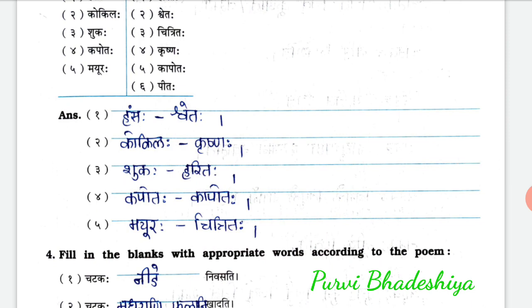1st: Hanchah — Swetah. 2nd: Kokilah — Krushnah. 3rd: Shukah — Haritah. 4th: Kapotah. 5th: Mayurah — Vichitraha. So the first one is swan, and swetah means white. Kokilah means cuckoo, and krushnah means black, so cuckoo is black. Shukah means parrot, and haritah means green, so parrot color is green. Kapotah means pigeon, and kapotah color means gray. Mayurah means peacock, and vichitraha means colorful.